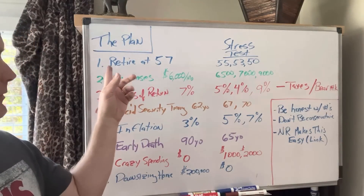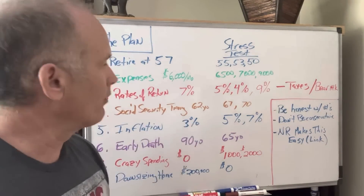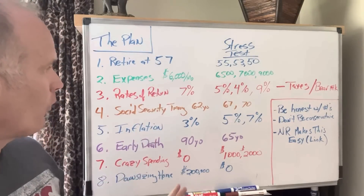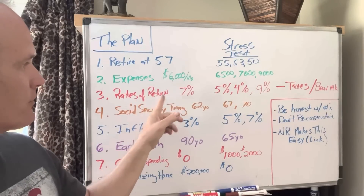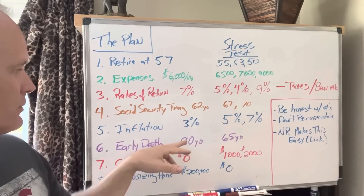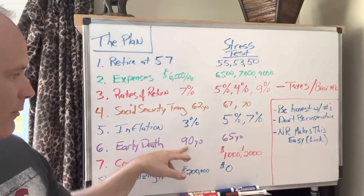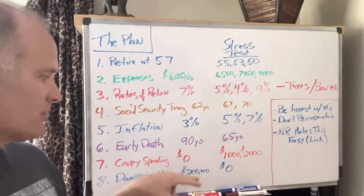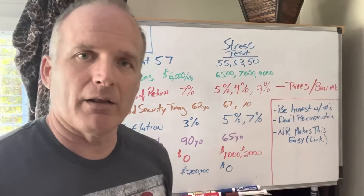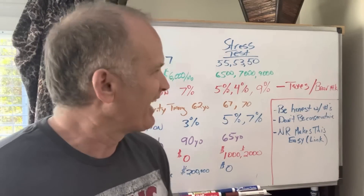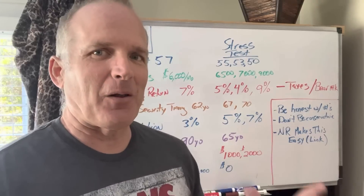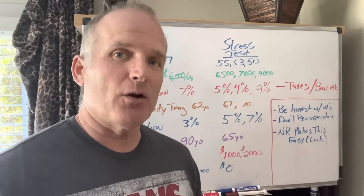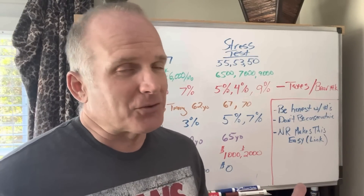Here's the plan. I've got just eight variables I'm going to go through. Your plan says you're going to retire at 57 and that all works. Your expenses are going to be $6,000. Your rates of return, you put in 7%. You're going to take Social Security at 62. Inflation is 3%. You're going to live till 90. There's some crazy spending I'll talk about, and you're going to downsize your home for $200,000. You throw that all into your Excel spreadsheet and it all works.